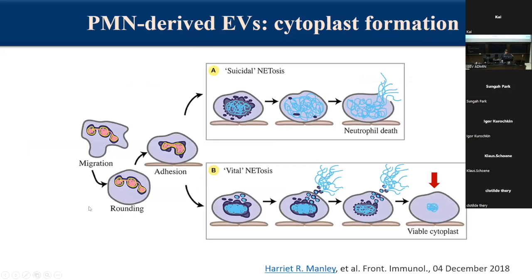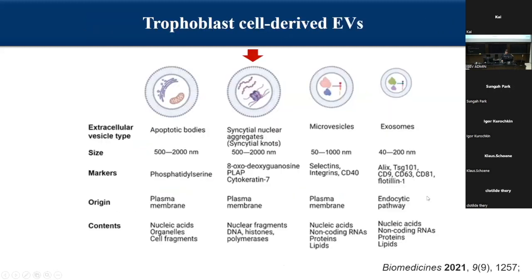Once neutrophils undergo NETosis — the release of nucleic acids — one type called non-suicidal NETosis occurs when the nucleic acid content is at least partially released. What remains is a non-conventional large structure called a cytoplast, which in the broad sense could be considered a huge extracellular vesicle; however, it retains its ability to migrate and even phagocytose. Finally, trophoblast-derived EVs include unconventional ones such as syncytial nuclear aggregates or syncytial knots, which are very large, have special markers, and are characteristic of the trophoblast surface.